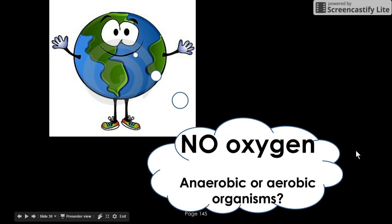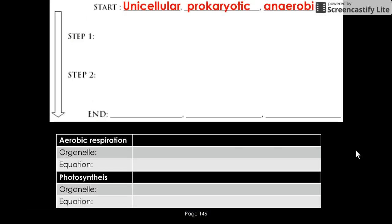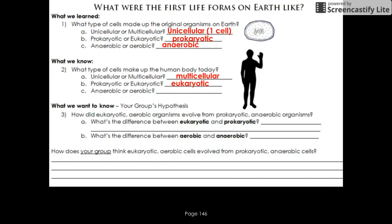We talked about the evolution of cells - how we started off as unicellular prokaryotic anaerobic cells and how we ended up with the cells we have today. We also filled in a few equations and organelles that go with aerobic respiration, and the equation and organelle that goes with photosynthesis. If you need help, go to page 46 or 47 in your binder.